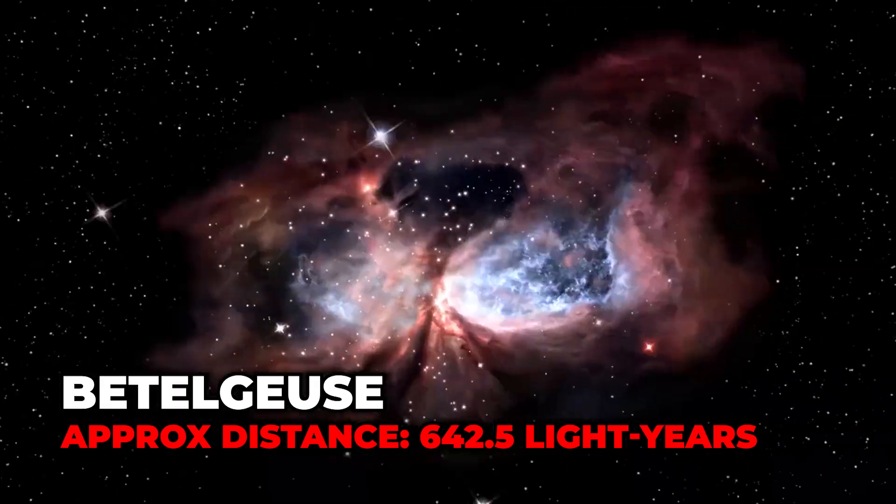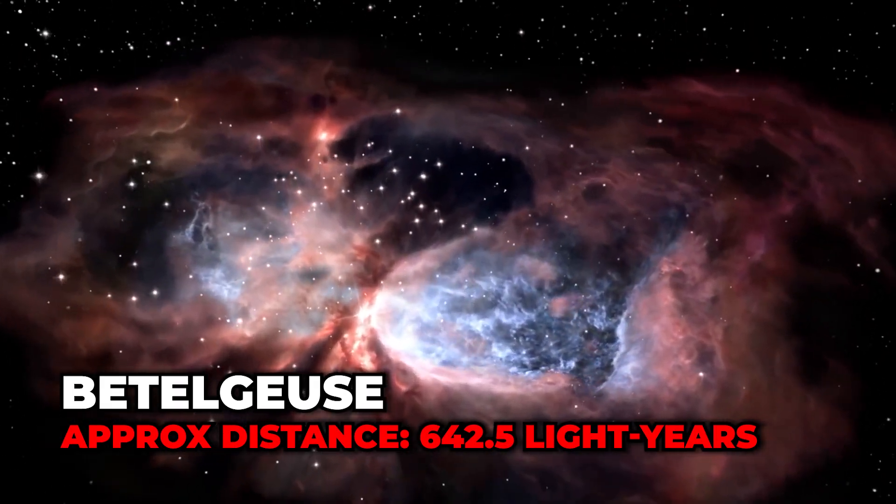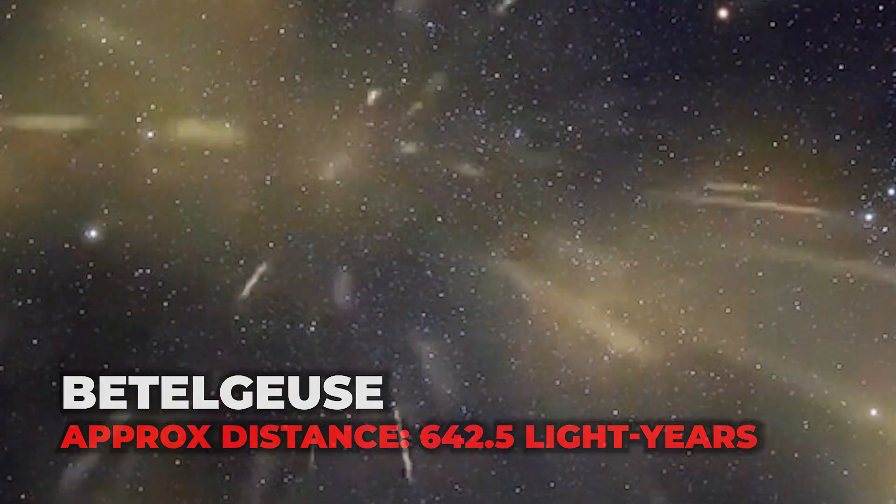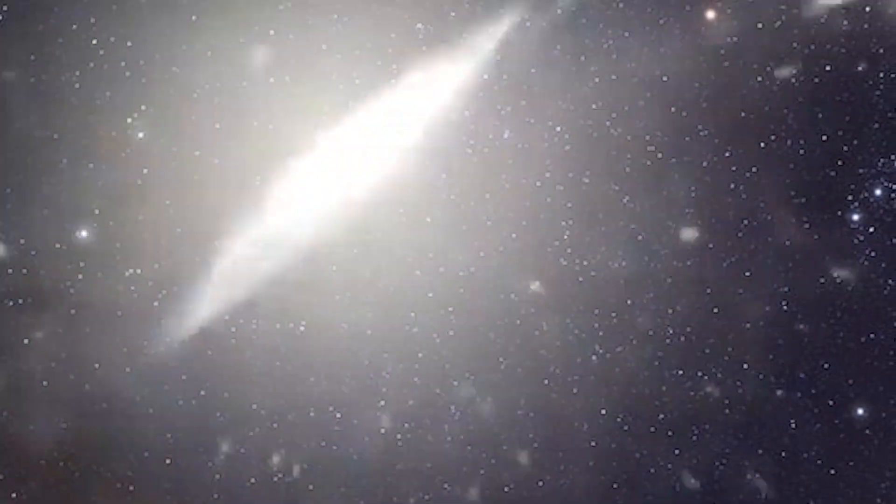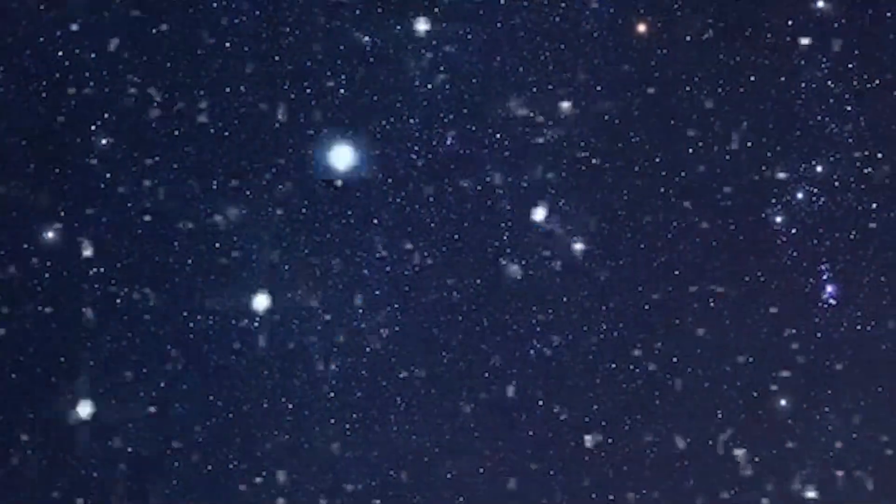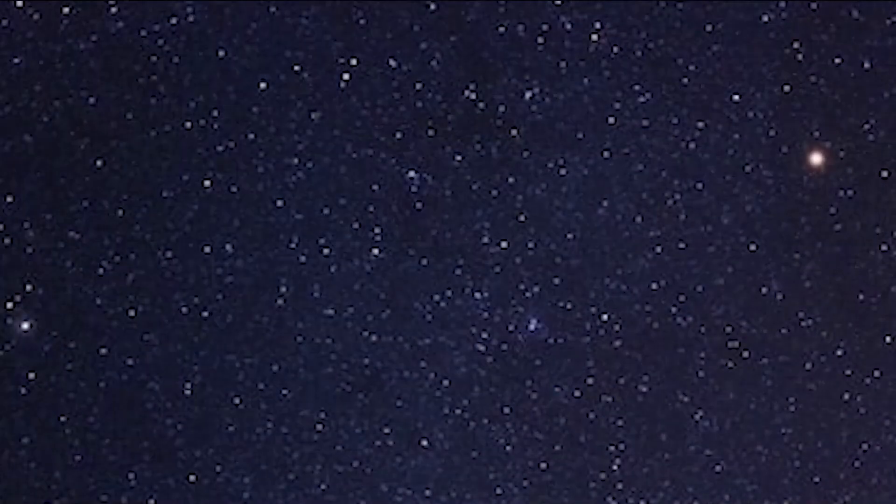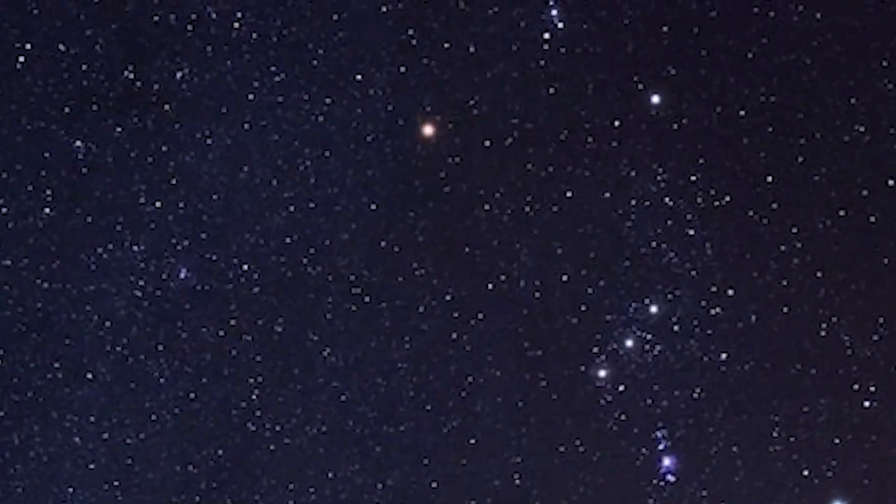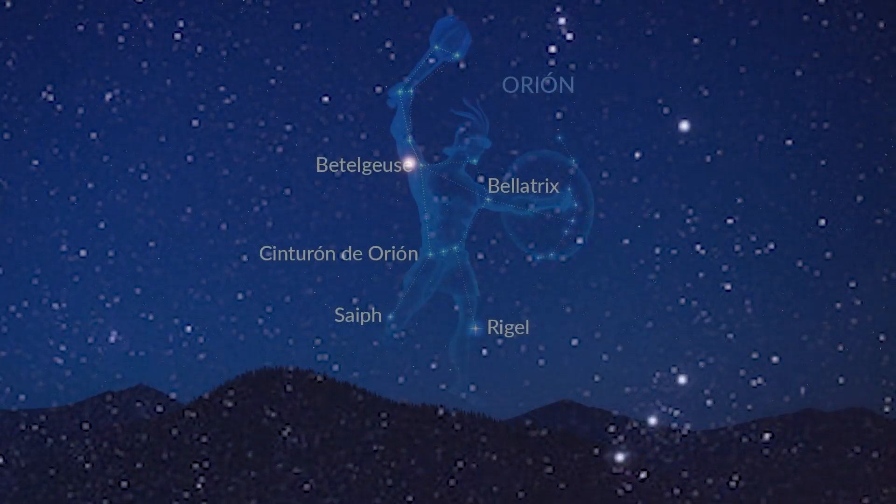Betelgeuse, located at a distance of approximately 642.5 light years from our planet, stands out as one of the most fascinating stars we can observe in Earth's sky. Recognized as the shoulder of the constellation Orion, the star has experienced an intriguing existence since its formation.